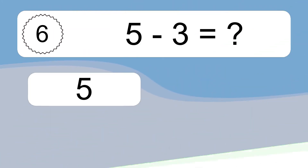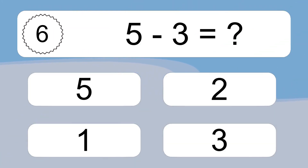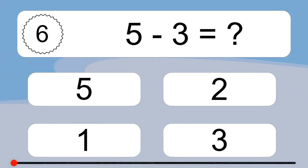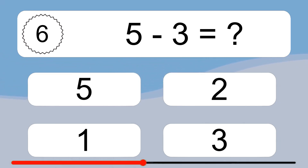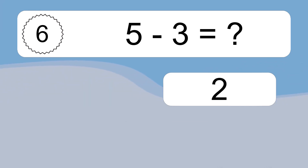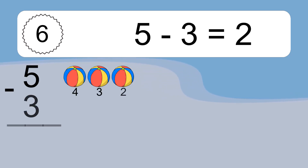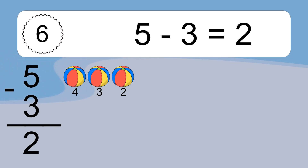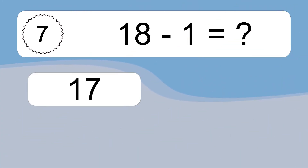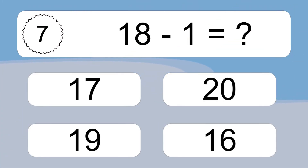5 minus 3 equals what? 5 minus 3 equals 2. Let's count it: 4, 3, 2.